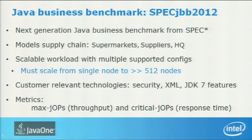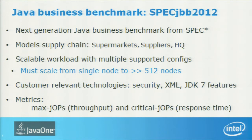The benchmark simulates the complete IT system — point of sale, IT employee data mining, everything on one IT infrastructure. We've tested it from a single node to 64 nodes, and ensured it should scale up to thousands of nodes. It uses the latest technologies: security, XML, JDK7 features. It has two metrics: max J-Ops for throughput, and a response time metric — the first time that's been introduced — showing how response time changes from 0% to 100% load.